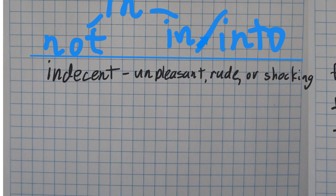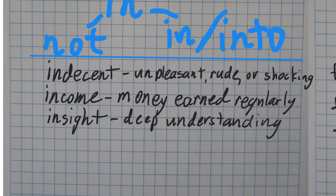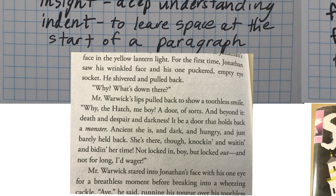The other ones here, I think, are all more of this meaning, in or into. A person's income is money someone earns regularly from a job. Insight means a deep understanding of something or someone. Indent is to leave space at the start of a paragraph. For example, if we take a look at the same text, we can see each time they are starting a new paragraph, they're leaving this space, or indentation. That's called to indent.